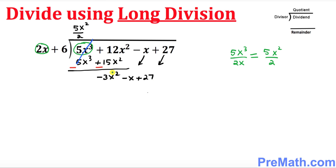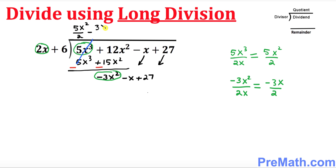Let's start the process all over again. Look at the leading term, which is negative 3x squared. Divide negative 3x squared by our leading term outside, which is 2x. That's going to give you negative 3x over 2. Write this negative 3x over 2 on top.